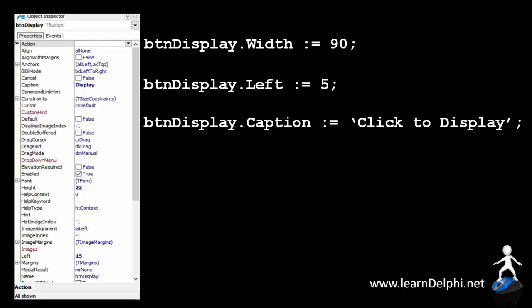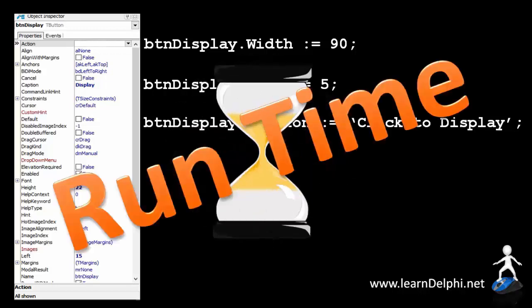All three these statements will only change the button's properties when the program is running and when the user invokes the event linked to the event handler. When properties are changed by a user while the program is running, we refer to it as property changes in runtime.